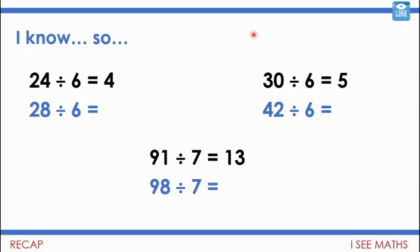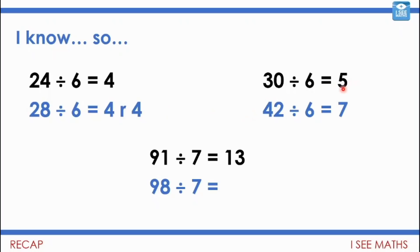Let's have a look. Well, 28 divided by 6 is 4 more, but that's not another whole lot of 6, so the answer will be 4 remainder 4. For the next one: 30 divided by 6 is 5, so what's the difference between 30 and 42? It is 12 — that's another two more lots of 6, making 7. And 91 divided by 7 is 13, so 98 divided by 7 is another lot of 7, so the answer must be 14. I hope you saw those patterns.